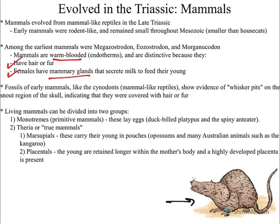We can divide up our living mammals into two groups: monotremes and etheria. Monotremes lay eggs — we'll look more at modern monotremes when we get to the Cenozoic, but modern ones would be like the duck-billed platypus. Etherias are true mammals, and we have two different types: marsupials, which carry their young in a pouch, like a kangaroo.